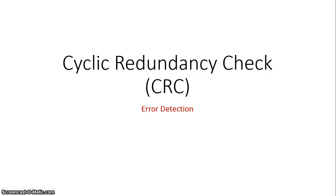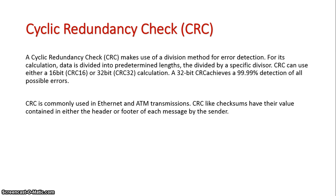We are now going to look at our third method of error detection: a cyclic redundancy test, otherwise known as a CRC. With a CRC, we make use of a division method similar to checksum for calculating errors in data. The only difference is the way we come up with our initial number, which is different to that of a checksum.